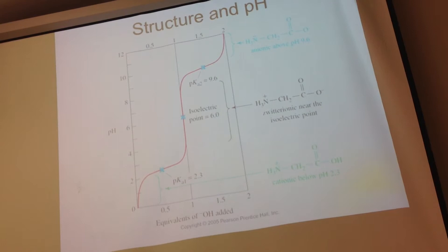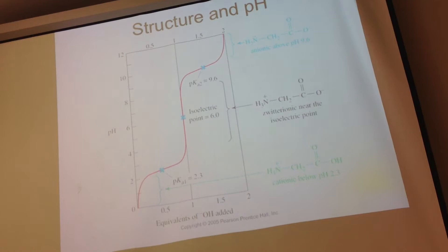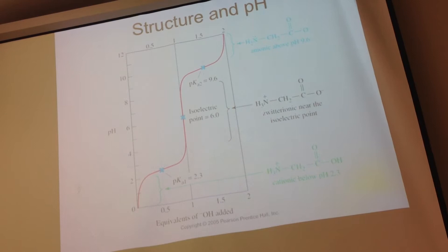At half an equivalent of base added — right at that point on the curve — that pH is the pKa. So the first pKa is about 2.3. For the second pKa, same process: at one and a half equivalents, I'm halfway between the zwitterion and the final deprotonated form, so the log term cancels out again. At one and a half equivalents, the pH gives my second pKa, which is about 9.6. If there were a third pKa — like for an acidic or basic side chain — there would be another flat region and you'd go to two and a half equivalents.